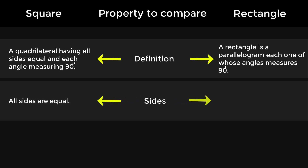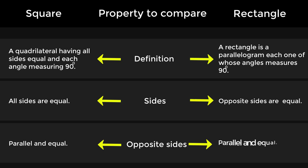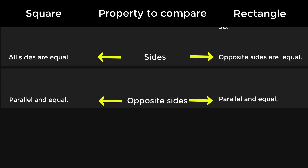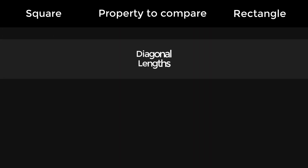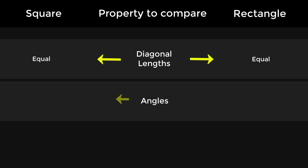Sides of a square: all sides are equal. Sides of a rectangle: opposite sides are equal. Opposite sides of a square are parallel and equal. Opposite sides of a rectangle are parallel and equal. Diagonal length of a square: equal. Diagonal length of a rectangle: equal.